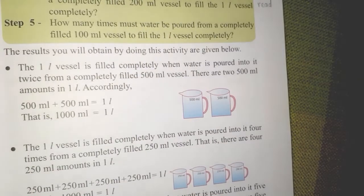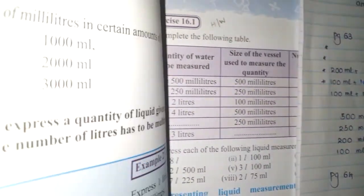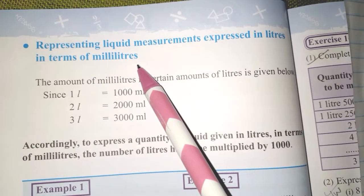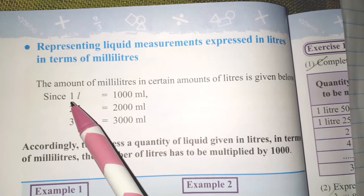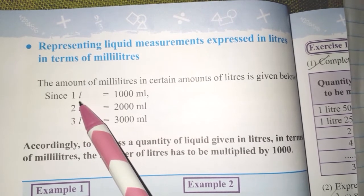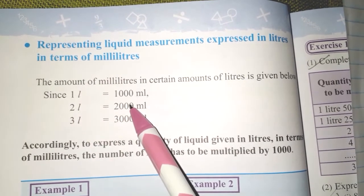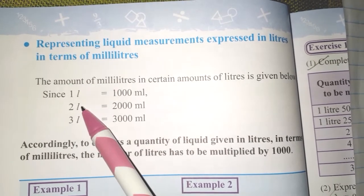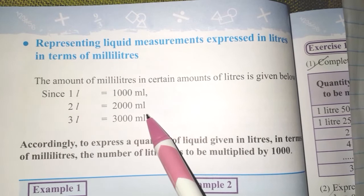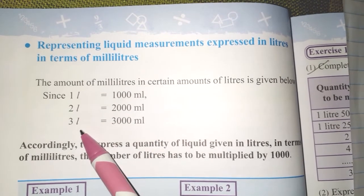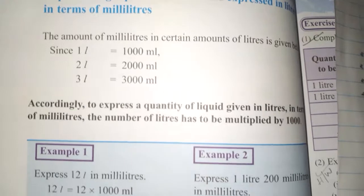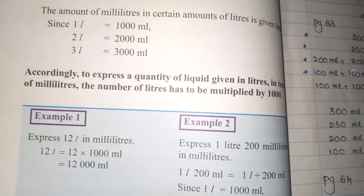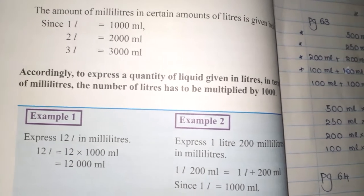Turn to page 64, children. We will be putting liquid measurements expressed in liters in terms of milliliters — so I am going to convert liters into milliliters. You know the relationship: 1 liter equals 1000 milliliters; 2 liters equals 2000 milliliters; 3 liters equals 3000 milliliters. Now I am going to show you some examples.